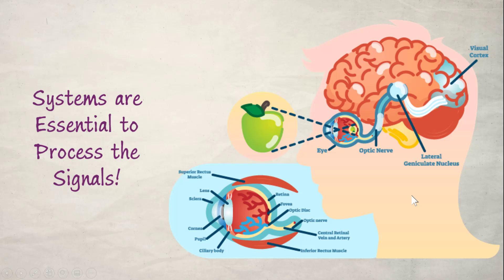Let us take the example of the human visual system. There are images or objects in front of our eyes and we need a system to process those objects or imageries. The corresponding images will be formed in the visual cortex of our brain. You can consider the eye and the brain together as the visual system. The image of an apple passes through the lens of our eye, reaches the retina, where light signals are converted into electrical pulses, and through the optic nerve it reaches our brain where the imagery is formed.